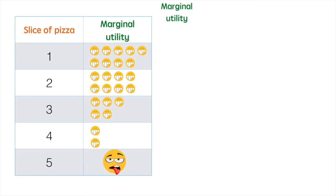Let's plot this information on a diagram with marginal utility on the y-axis and the quantity of slices of pizza on the x-axis.